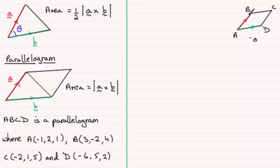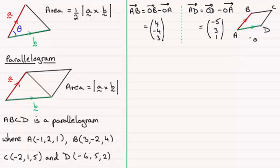So working off this diagram then, AB would equal OB minus OA and that comes to (4, -4, 3), and similarly AD is OD minus OA and that comes to (-5, 3, 1).